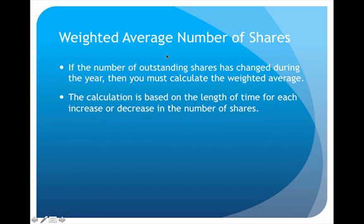Sometimes the number of shares can be a little more complicated. This happens for any company where the stock actually changed throughout the year. Unlike that previous example where it stayed at 100,000 the entire year, if the number of shares fluctuates up and down, then we would have to calculate a weighted average. So we're going to take a look at that type of example.